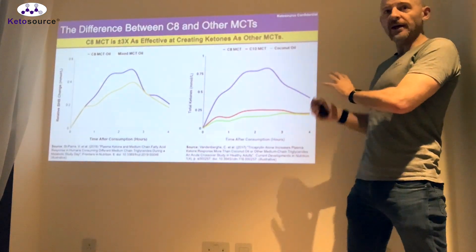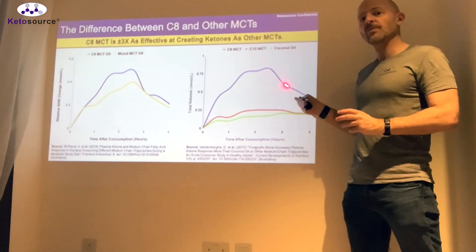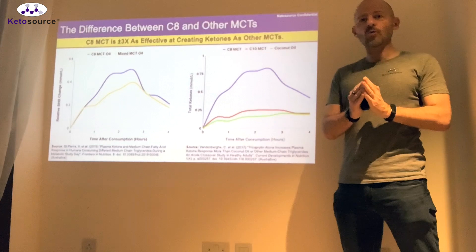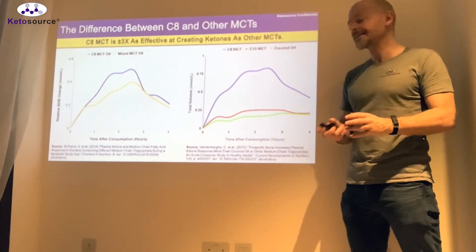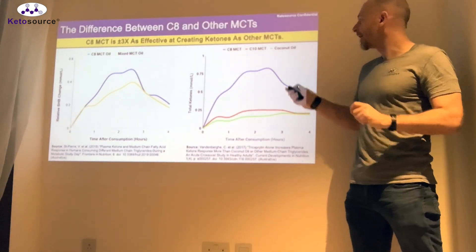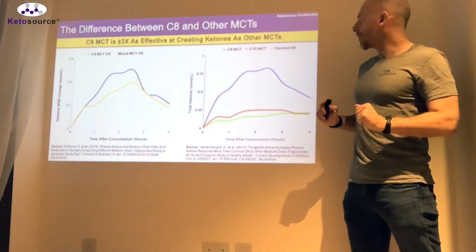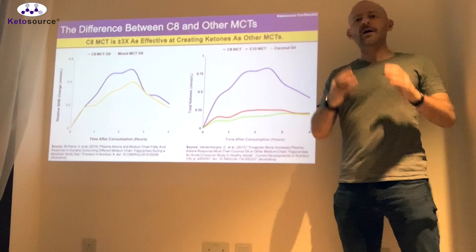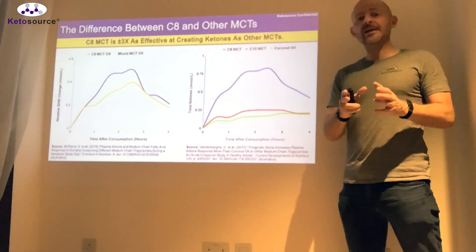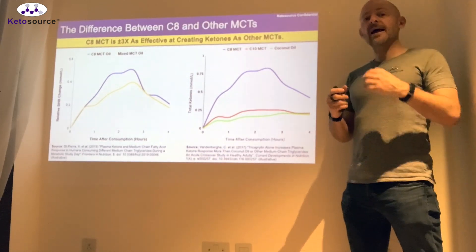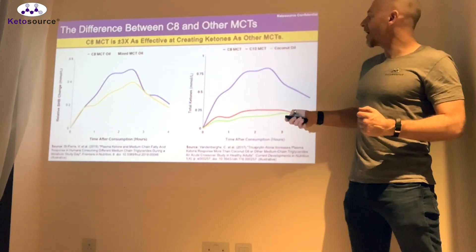This second chart looks at a more detailed level, comparing C8 MCT with the purple line again against pure C10 on its own — not a mix. Most MCT oils have a mixture, but this one isolates pure C10 to understand what each does individually. We also have coconut oil in green at the bottom. The difference here is we're looking at total ketones — not just beta-hydroxybutyrate, but beta-hydroxybutyrate plus acetoacetate — so it's tracking two types of ketones, which is why you see different values.